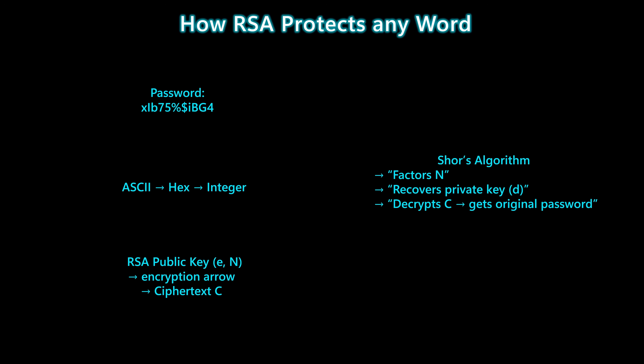This is exactly where Shor's algorithm becomes dangerous. Shor doesn't attack the password directly — it attacks N. Once N is factored, the private key falls out immediately. With that private key, the attacker can decrypt the ciphertext, reverse the process, and recover the original password in plain text. We'll walk through this process step by step: converting the password to a number, encrypting it with RSA, running Shor's algorithm on a realistic example, extracting the factors, and finally decrypting the ciphertext to reveal the original password. This is how quantum computers break classical encryption.